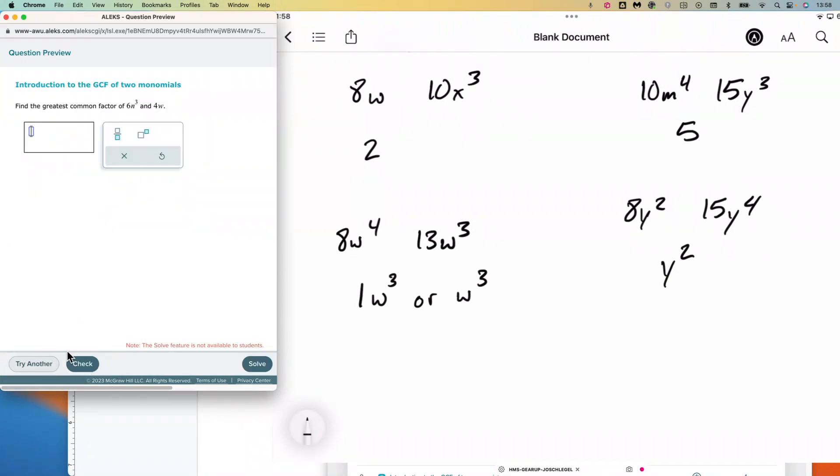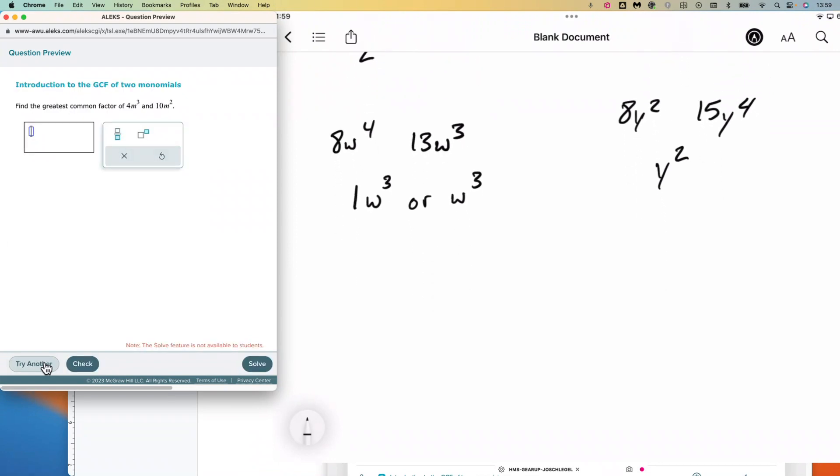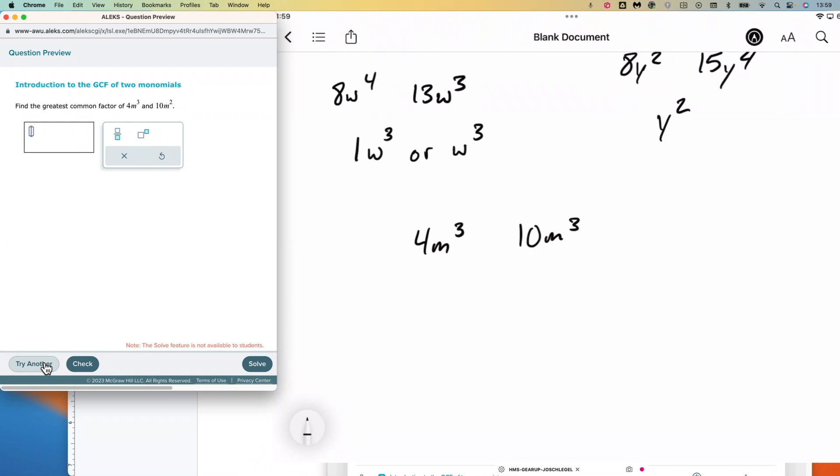We'll try maybe one more. So we have 4m to the power of 3 and 10m to the power of 2. Now 2 goes into both 4 and 10, and they both have m. Oops, that's an m to the 2—making a lot of typos today. They both have m, so we need to figure out which one has the least number of m's in them—that's m to the second power. So 2m to the 2, or 2m squared, is going to be the greatest common factor here.